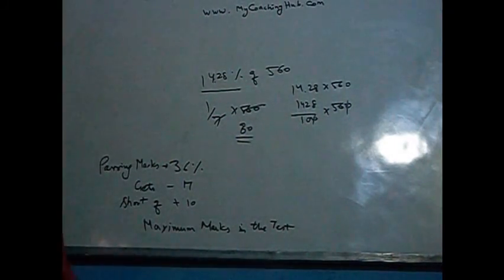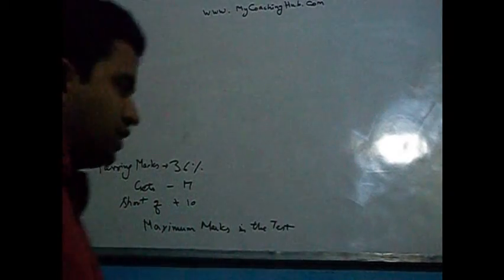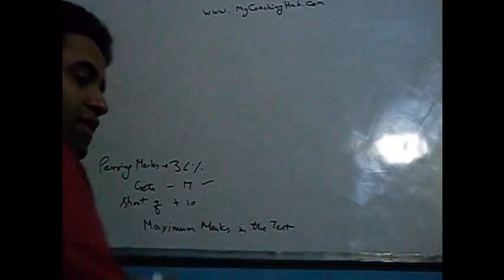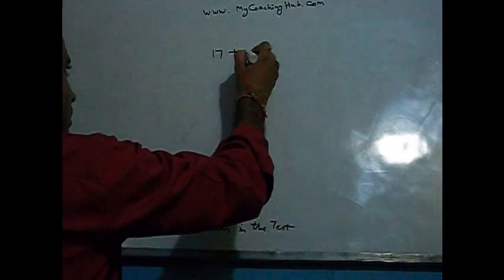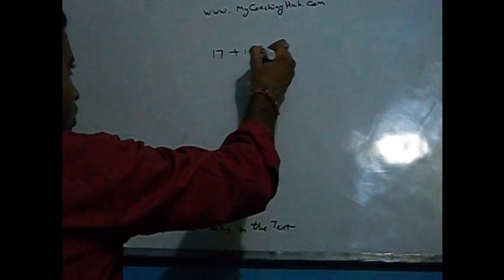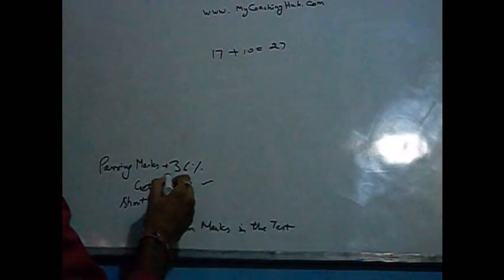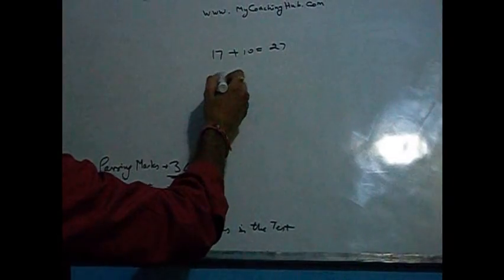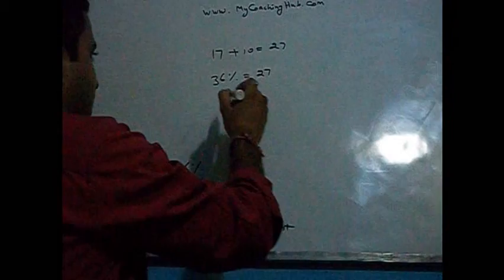Now let us see how we do that. A person has got 17 marks and fails by 10 marks, so the passing marks are actually 27. Since 27 equals 36%, what is 100%?